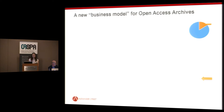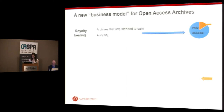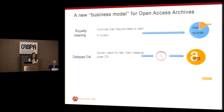So we began to explore ways to address these two challenges: first coming up with publishing models that would work, and then coming up with a platform that would allow us to marry these types of content together. We created a three-path approach to publishing content. In the first approach — essentially our traditional model — it's royalty-bearing and an archive agrees to make content available in a subscription database. Through that database, we generate royalties back to the archive.